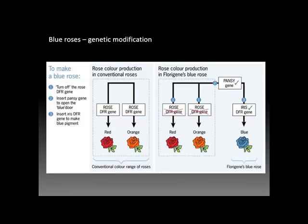Sticking genes from one flower or plant into another could create a new palette of splashy colors. Indeed, roses have been genetically modified. A fluorogene blue rose is produced by introducing a blue pansy gene into the DNA for a standard red or orange rose. It's just one example among many of the way in which genetically modified organisms can be produced.